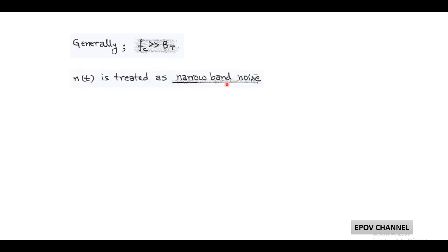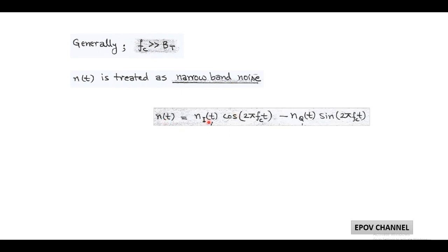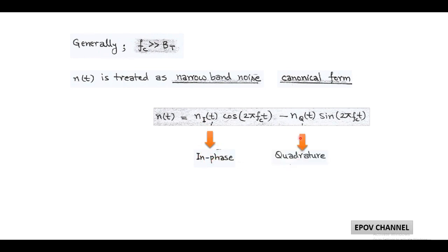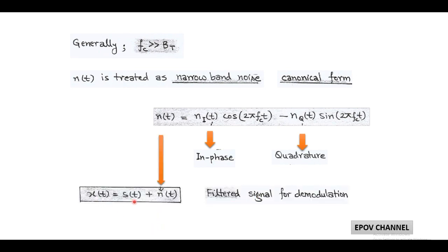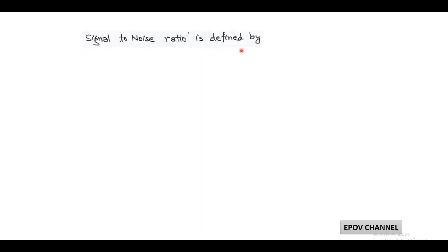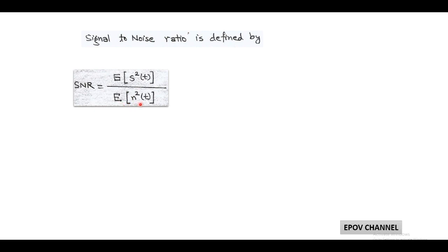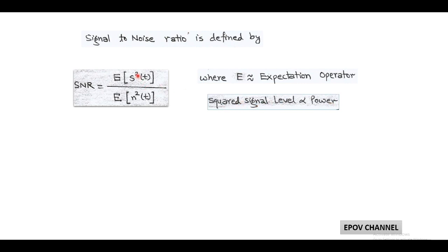The filtered noise is called narrowband noise and is written mathematically in terms of an in-phase component and a quadrature component, known as canonical form. So filtered noise or narrowband noise equals Ni(t) cos(2πfct) − Nq(t) sin(2πfct), where N_i is called the in-phase component and N_q is called the quadrature component. For the demodulation process, the filtered signal becomes X(t) = S(t) + N(t). With the help of this equation we can define the signal power to noise power ratio in terms of the expectation operator: SNR = E[S²(t)] / E[N²(t)], where E is the expectation operator and the square of the signal level is directly proportional to power.